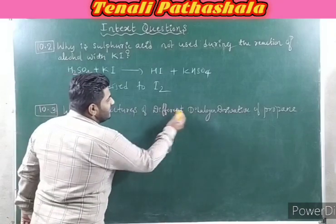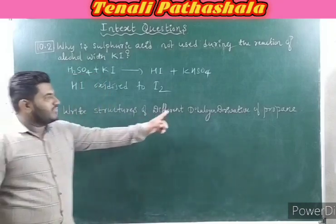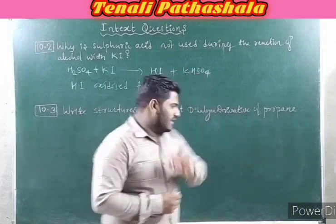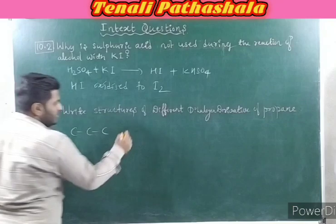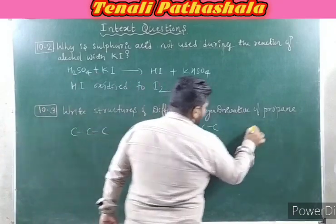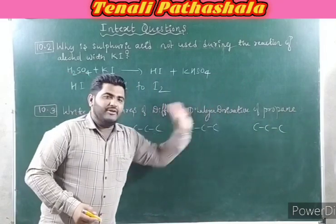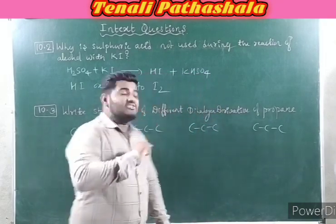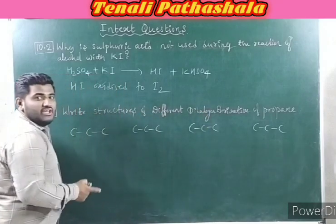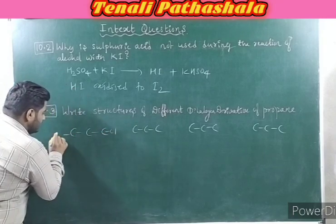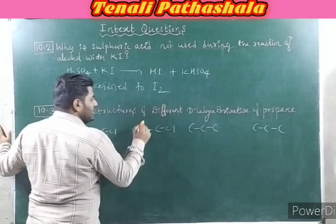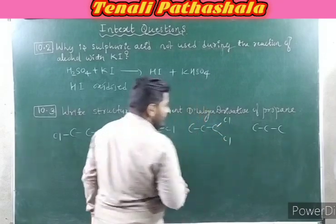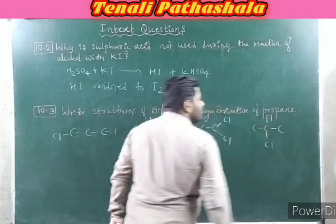Second in-text question: write the structures of different dihalogen derivatives of propane. Propane means three carbons. So you write three carbons. Dihalogen means two halogens you have to add, and you should get different structures. First case: add one halogen on carbon 1 and one halogen on carbon 3. Second case: one halogen on carbon 1 and one halogen on carbon 2. Third case: both halogens on the same end carbon. Fourth case: both halogens on the middle carbon. So these are the four possibilities.